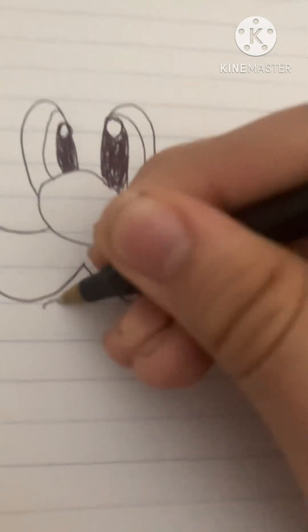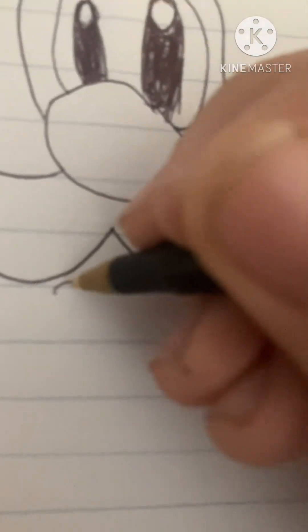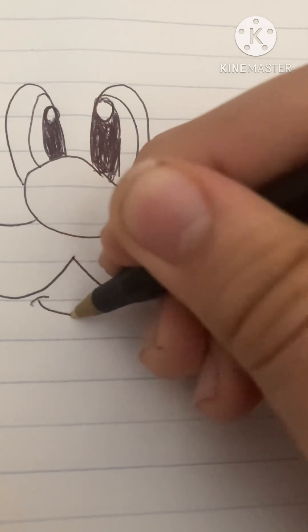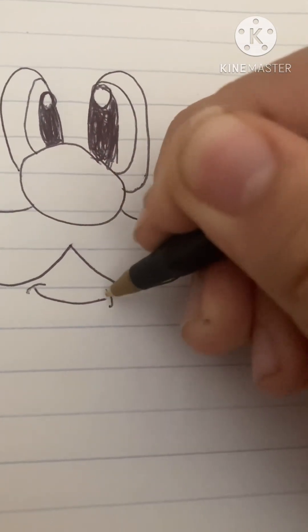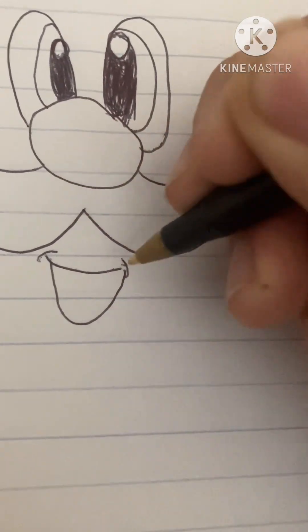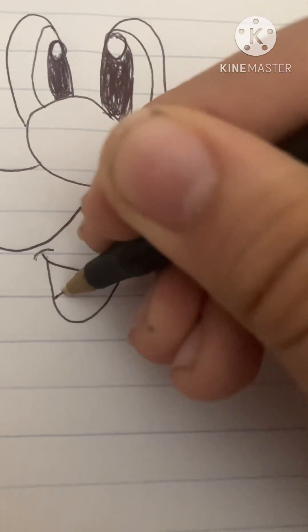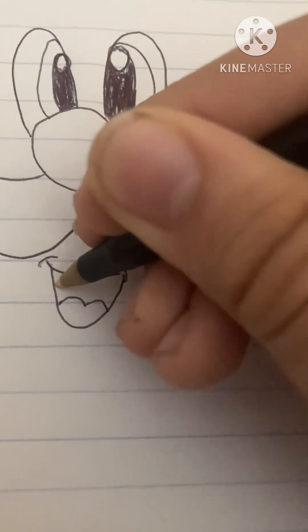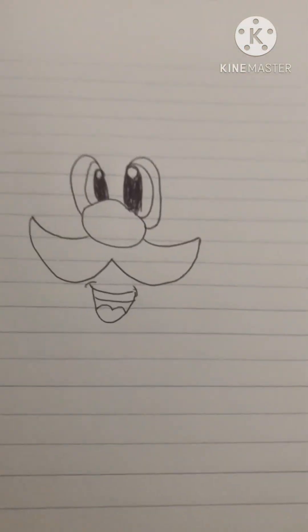Now what you're gonna do is you're gonna draw this little thing and then do a smile. And then you're gonna go down. You're gonna do the tongue and then the teeth. So there's Luigi's face.